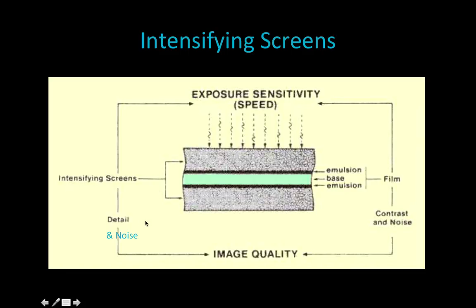In terms of image quality, intensifying screens are related to spatial resolution or detail and noise. I've added noise to this part of the diagram because it did not have that component. For film, it mainly affects contrast and is also related to noise, however to a much lesser extent than the intensifying screen. The intensifying screen is going to create image noise or quantum mottle, and all of that contributes to image quality.